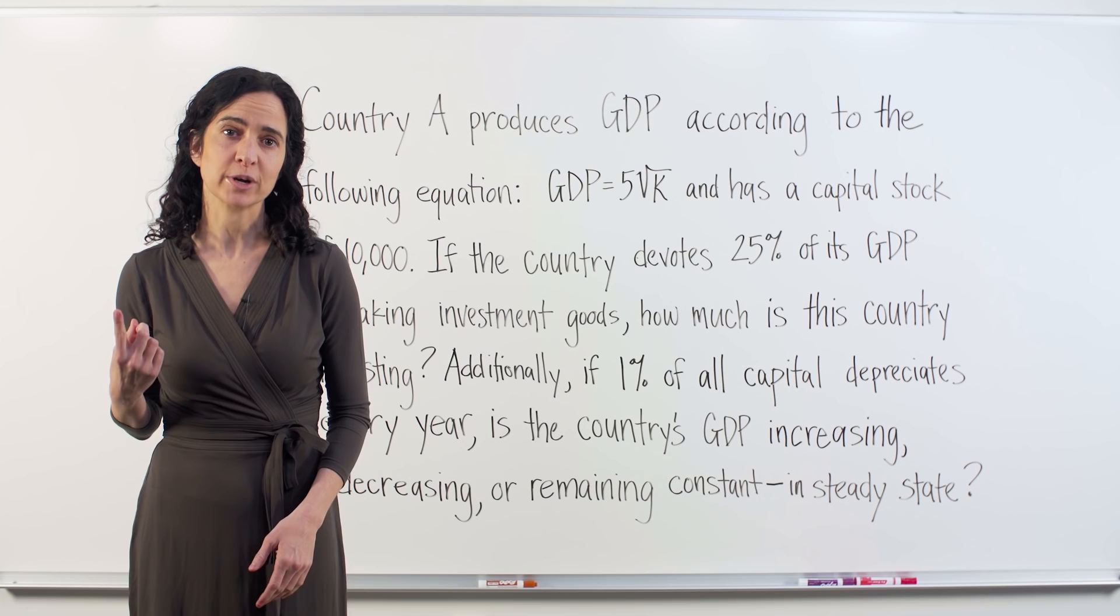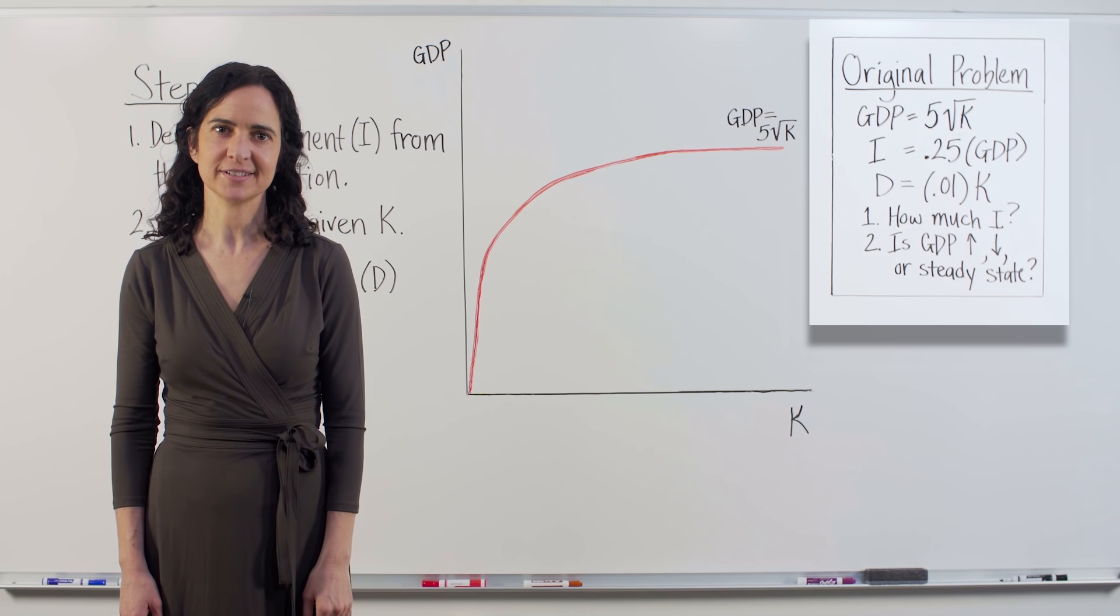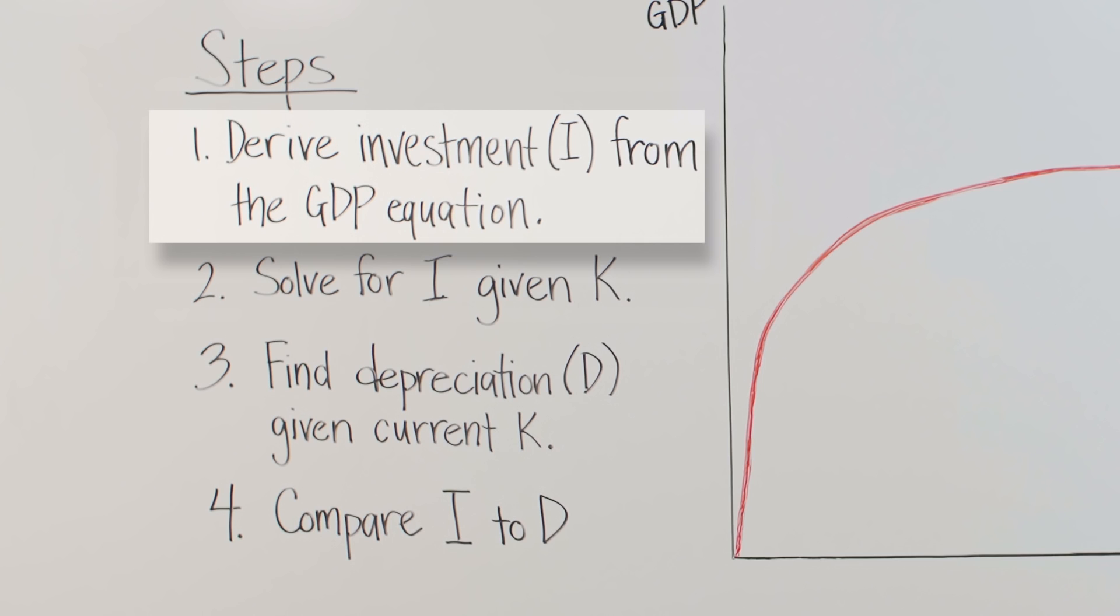First things first, the relevant information from the problem is in that top right-hand corner of the board for reference. As always, it's best to identify steps for solving the problem. The first of the two questions is fairly straightforward. Simply derive the investment equation from the GDP equation and then solve for I, given the current capital stock of 10,000.